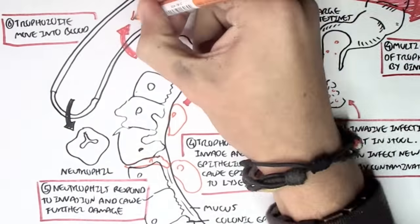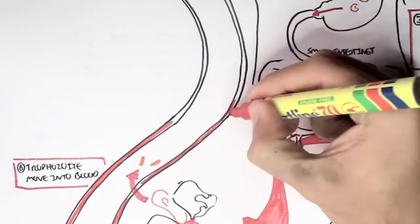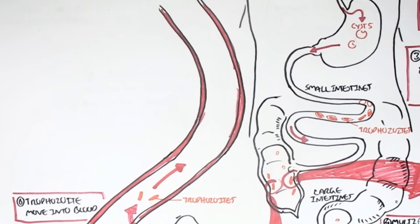And then the trophozoite can then move into the bloodstream. When in the bloodstream, the trophozoite can target other organs.